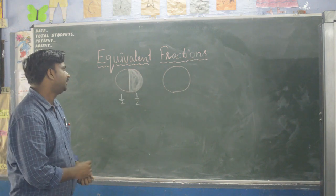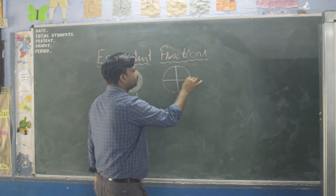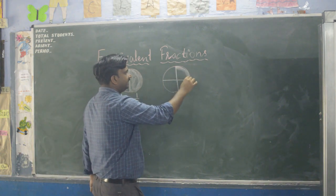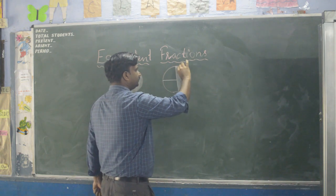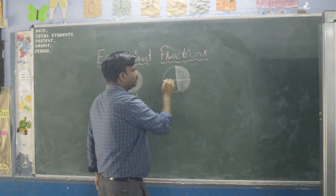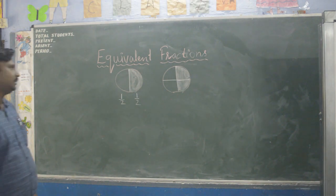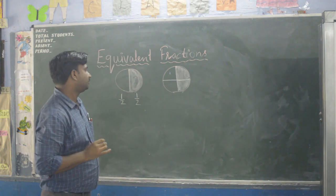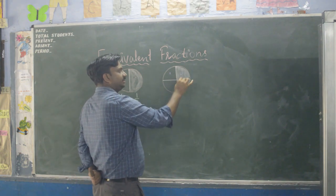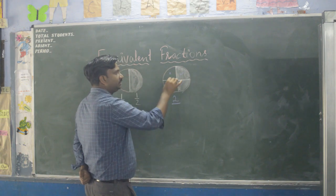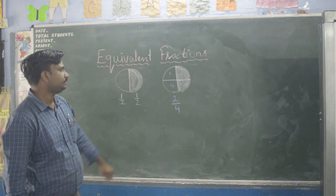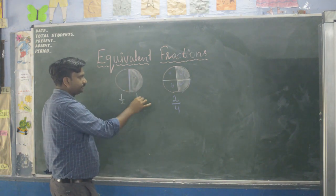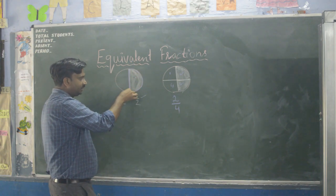Now let us divide the circle into four equal parts. The same circle is divided into four equal parts and two parts are shaded. One part, two part, three part, four part — so what will be the fraction of the shaded portions? Two portions are shaded out of total four portions, so the fraction will be two upon four.